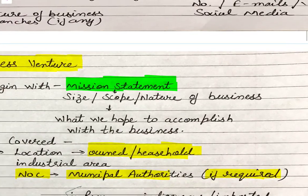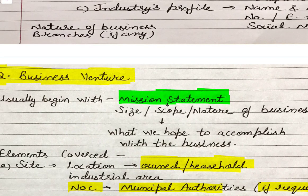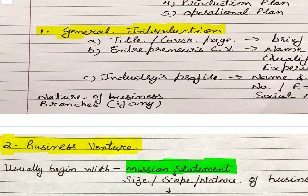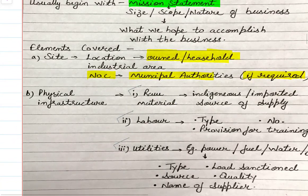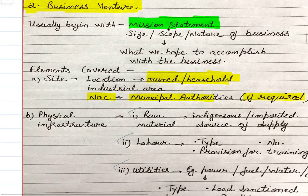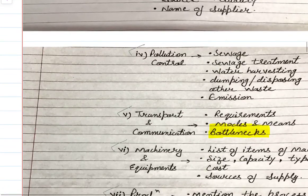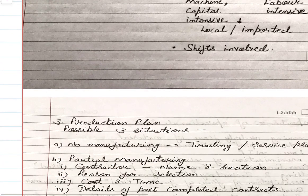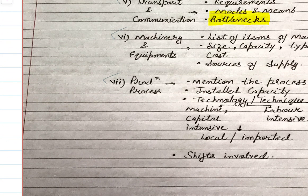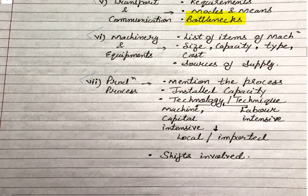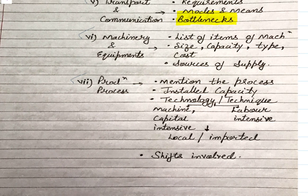In this video we have covered two components of the business plan: general introduction and business venture. Within business venture, we covered site data and physical infrastructure with its elements. In the next video we will look at the remaining plans — production plan, operational plan, marketing plan, human resource plan, and financial plan. Stay tuned, thank you for watching, have a good day, and stay subscribed.